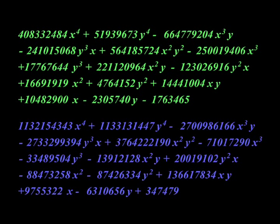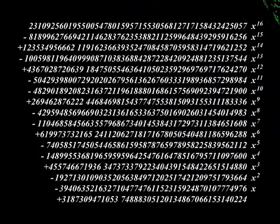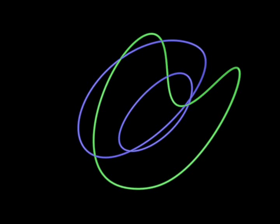But we cannot compute the common roots of the blue and the green polynomial directly. Instead, a resultant computation determines a univariate polynomial of degree 16. The x-coordinates of the intersection points of the blue and the green curve are roots of this polynomial. Everything you do is algebra. Yes, in the next step we isolate the real roots of the polynomial by a Sturm-sequence computation.